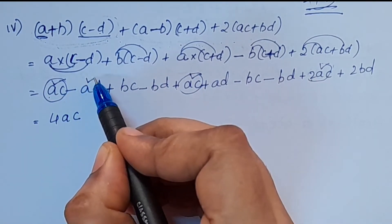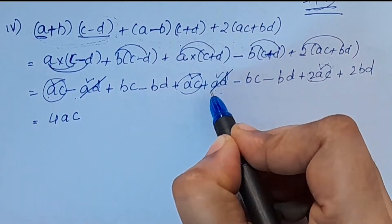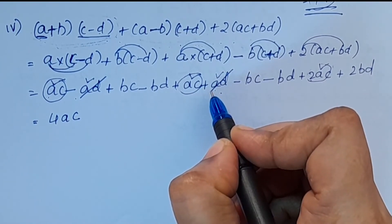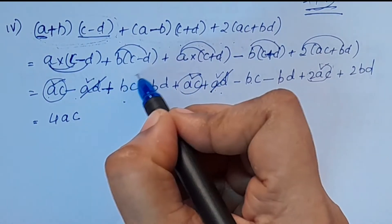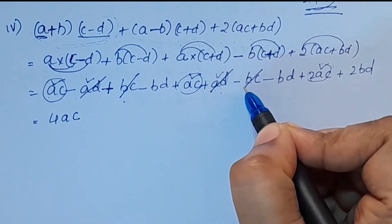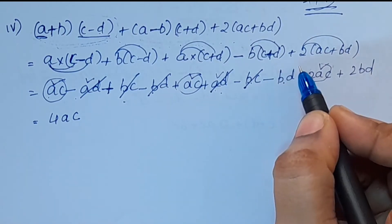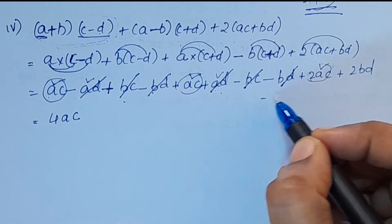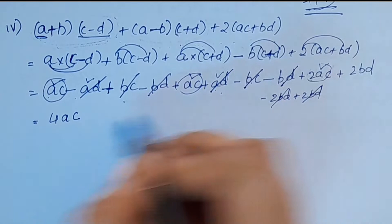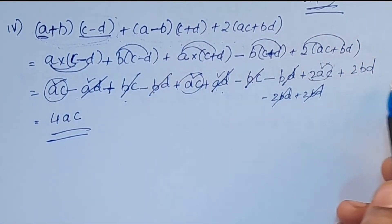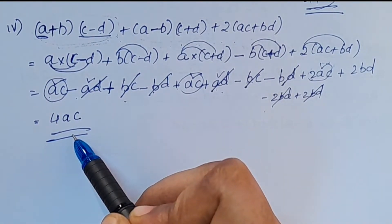This is minus c, plus c — now minus c plus c, we need to cut. This is a sign change. bc is plus and minus, we need to cut — this is 0. Minus bd, minus bd: 2 minus 2bd. Minus 2bd plus 2bd — that is 0. The answer is 4ac.